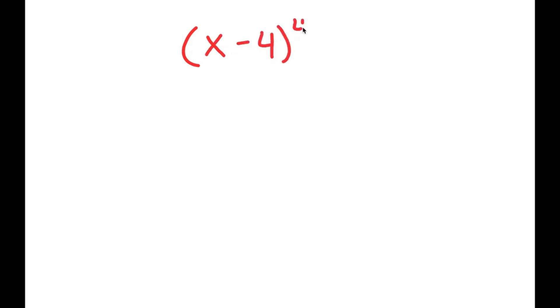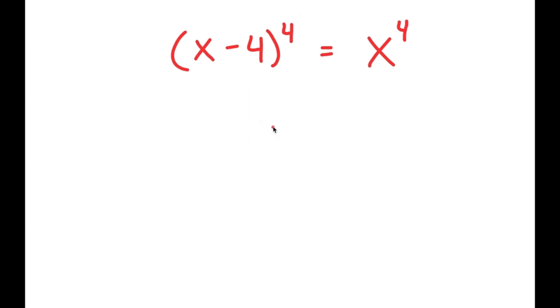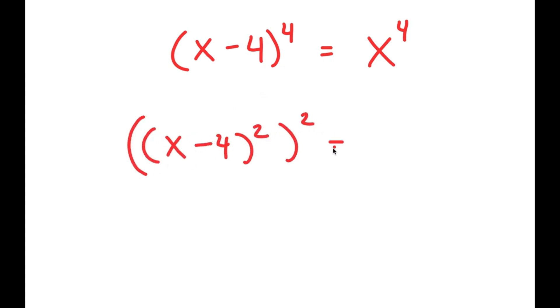In this video, I'm going to solve the problem (x minus 4) to the power of 4 is equal to x to the power of 4. To solve this, I'm going to first start by rewriting this as (x minus 4) squared to the power of 2 is equal to x to the power of 2, to the power of 2.